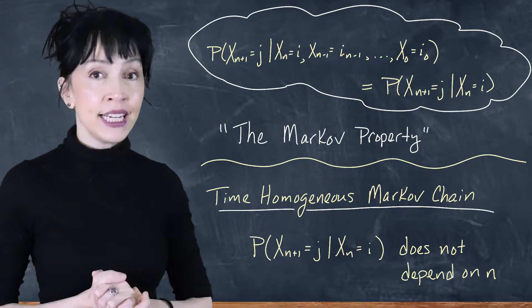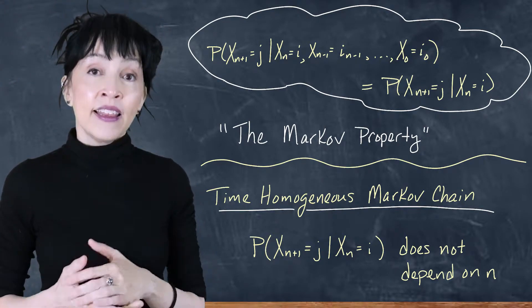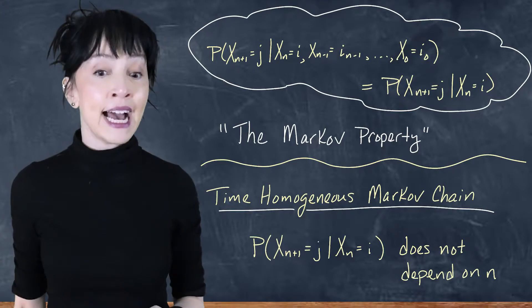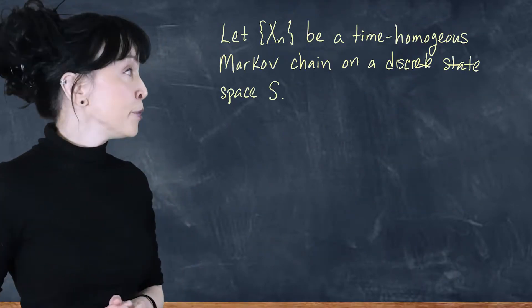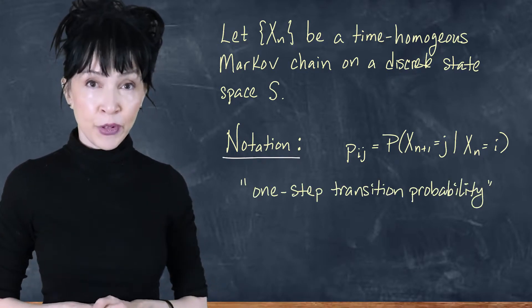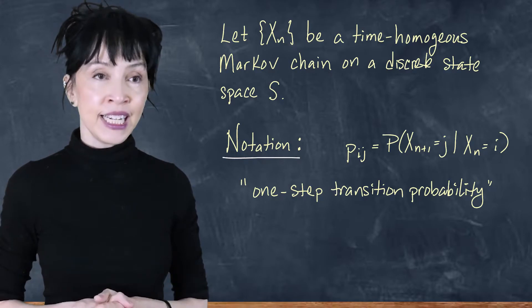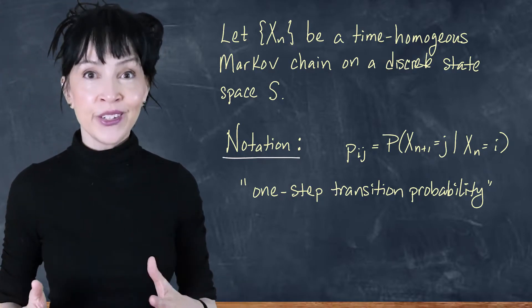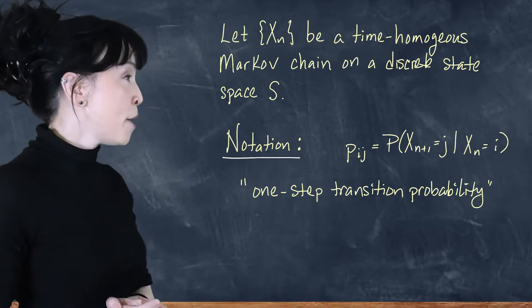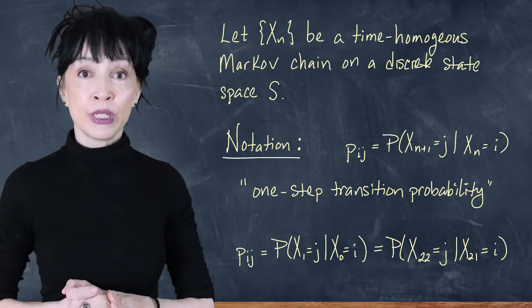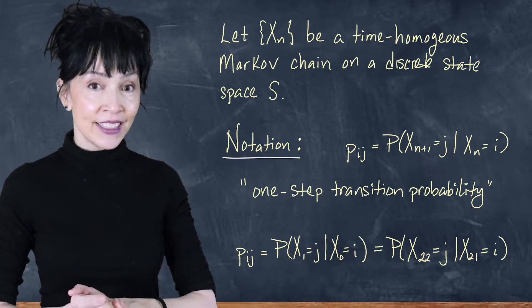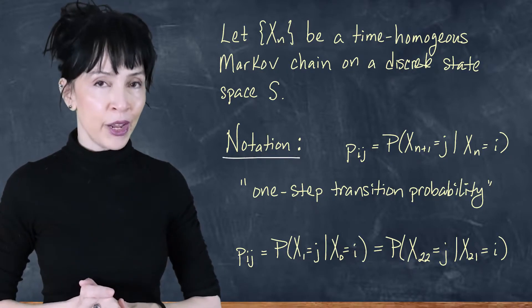If this probability does not depend on n, we can write it in a shorthand notation that just specifies i and j. We're going to use a lowercase p sub ij to be this so-called one-step transition probability — the probability that you go to j at time n+1 given you were at i at time n, but n doesn't matter. So this is the probability that X_1 equals j given X_0 equals i, but it's also the probability that X_22 equals j given X_21 equals i.